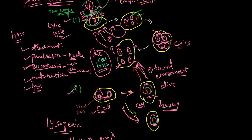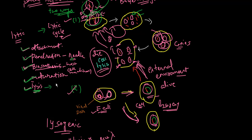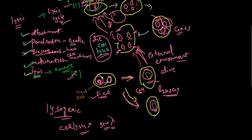To summarize both cycles: in the lytic cycle, there is attachment, then penetration, followed by biosynthesis, then maturation, ending with cell lysis. New viruses escape and the neighboring cell is infected, continuing the cycle.